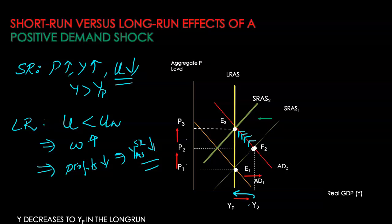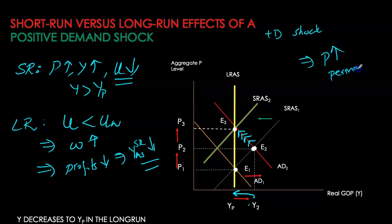So the economy has self-corrected itself out of an inflationary output gap. The cost of self-correction here is the higher price level that we'll have to bear as we wait for the economy to self-correct. So we see that when the economy is allowed to correct itself in the long run, demand shocks are only going to cause temporary changes in production level but permanent changes in our price level. With a positive demand shock, the lasting impact is only on our price level and not on our production.